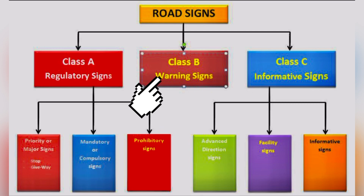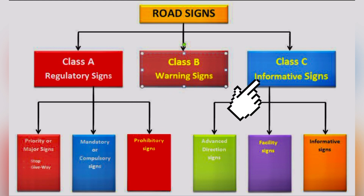Class B warning signs are any sign that gives a caution or provides information about danger on the road — signs that warn you. These are triangular-shaped signs with the apex facing upwards. The third class gives you information only — no direct order, no warning. We call them informative signs. For example: hospital available, parking available — just information signs.